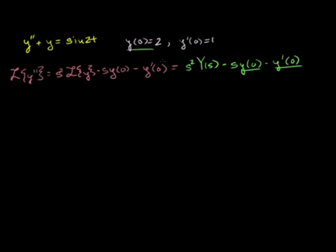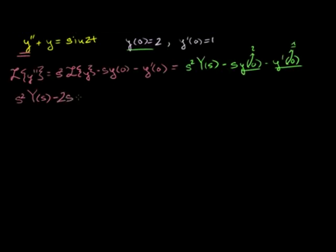We know what these values are. y(0) is 2, and y'(0) is 1 — it was given to us. So if we take the Laplace transform of both sides of this equation, we take the Laplace transform of the second derivative term: that's s squared times Y(s), minus 2s, minus 1.